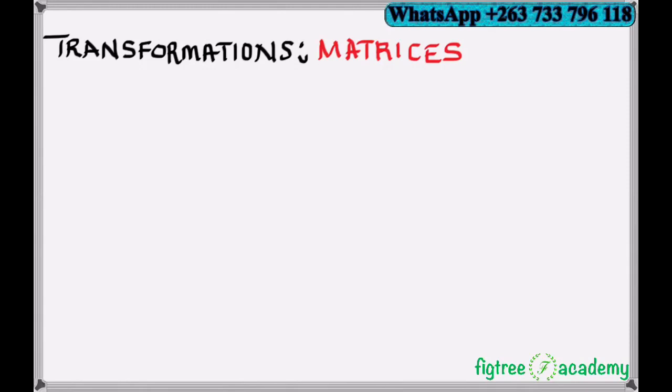In the last lesson, we discussed how to translate shapes using a translation factor. A translation factor uses a column matrix or a column vector.